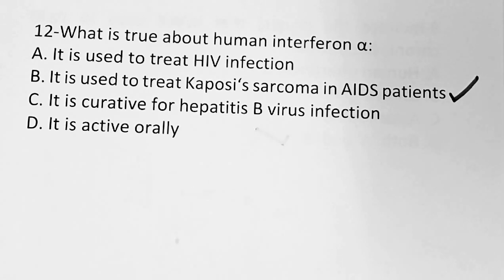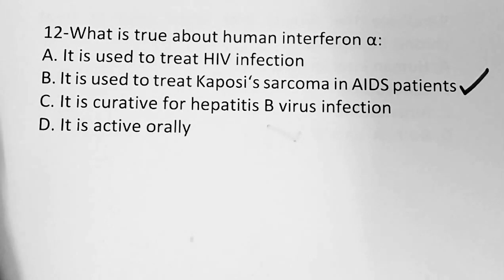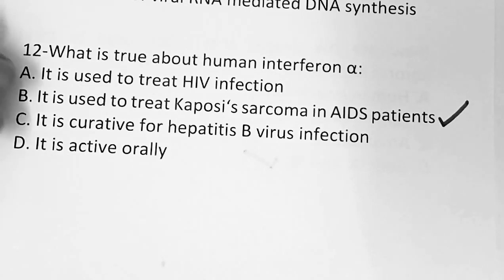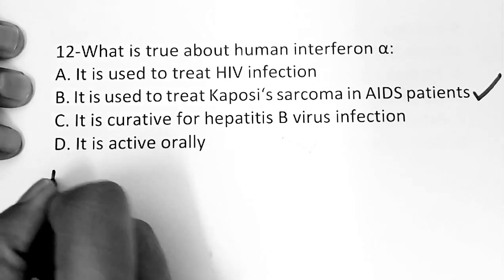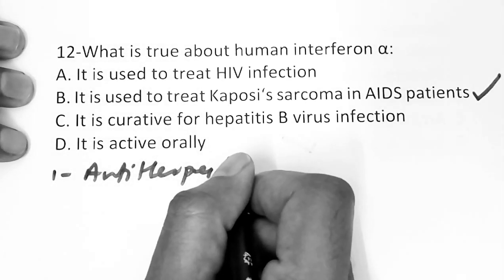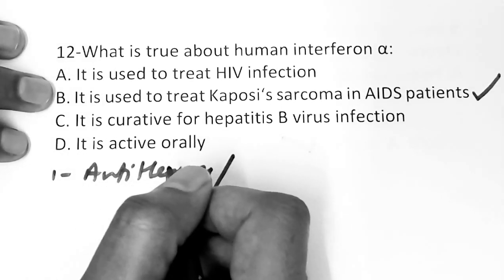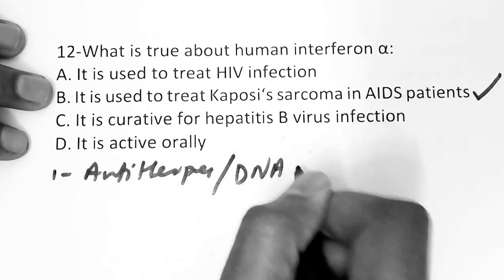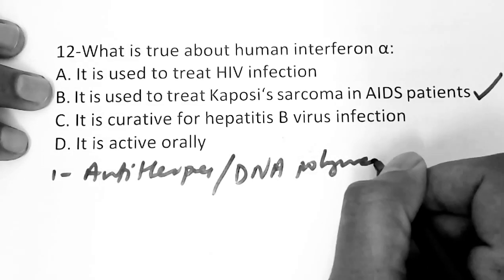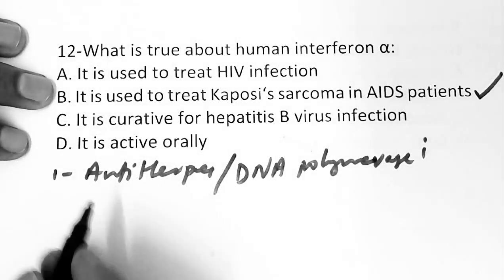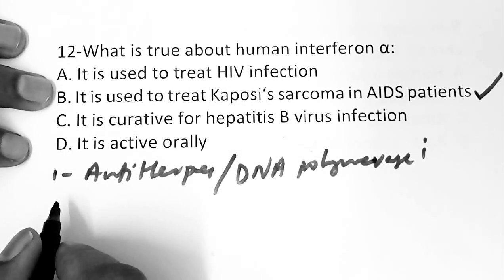Now we will see the classification of antiviral drugs. The first classification is anti-herpes drugs, which act against the herpes variety of viruses. Their mechanism of action is DNA polymerase inhibition. Examples include idoxuridine, acyclovir, valacyclovir, famciclovir, and other anti-herpes antiviral drugs.